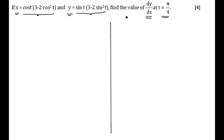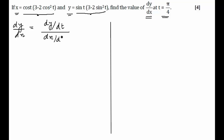So now I cannot calculate dy/dx directly. To find dy/dx, I can separately calculate dy/dt and separately calculate dx/dt, and then take their ratio, which is equal to dy/dx. This is the basic idea behind the solution of this question.